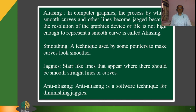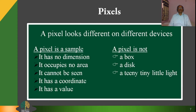Pixels are the core upon which all these depend. A pixel is a sample which has no dimension, does not occupy any area, and even cannot be seen, but it has a coordinate with a value. We may say that a pixel is neither a box, nor a disk, nor tiny little light rays. These are the characteristics by which we understand what a pixel represents.